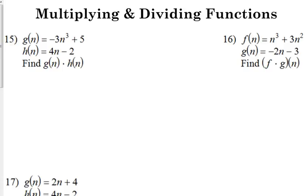So let's look at 15. We've got two functions, g of n and h of n, and they want us to find g of n times h of n. The biggest thing that I foresee being an issue with these is that people are going to forget to put parentheses. So g of n, put it in parentheses, times h of n, and we're going to FOIL it out.